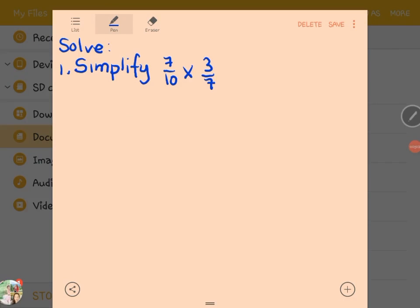Let us solve. Simplify 7/10 multiplied by 3/7. First, we have to write 7/10 multiplied by 3/7.